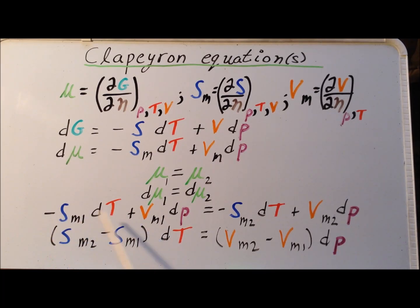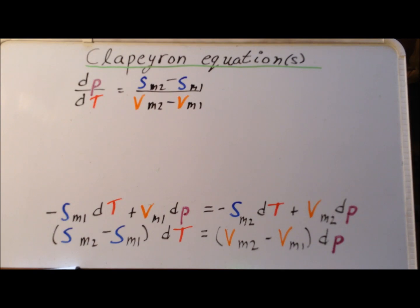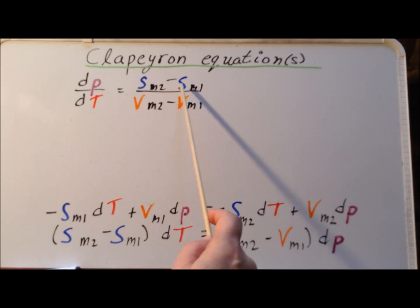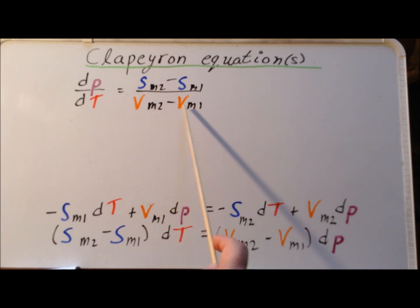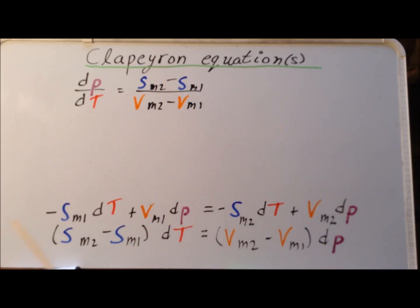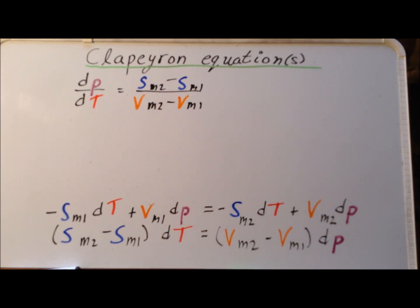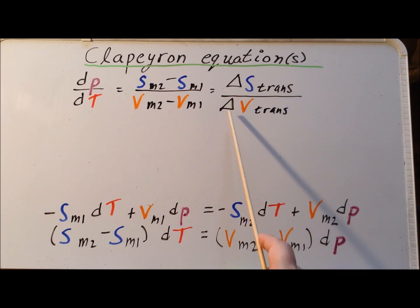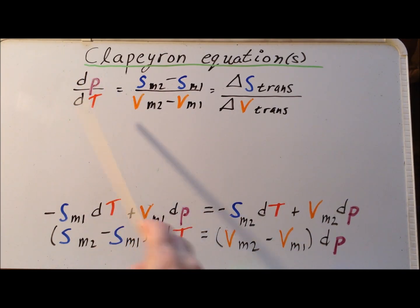So we have collected the partial molar entropies on one side and the partial molar volumes on the other side. Dividing through each side by V sub M2 minus V sub M1, and then by dT, gives us that dP/dT is equal to (S sub M2 minus S sub M1) divided by (V sub M2 minus V sub M1) — that is, delta S for the transition divided by delta V for the transition.